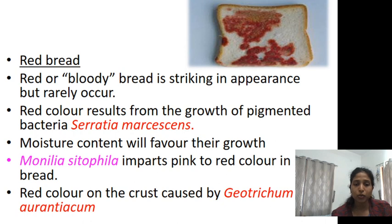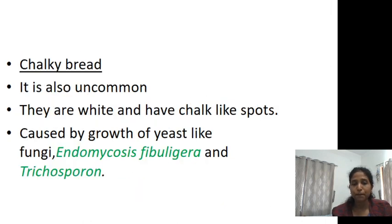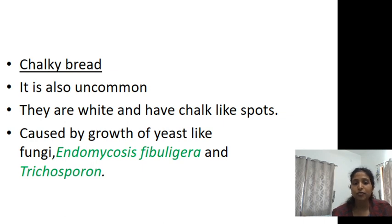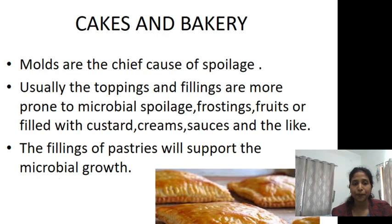Red color on the crust is caused by Geotrichum aurantiacum. Chalky bread, as the name indicates, shows chalk-like spots on the bread, which is caused by yeast-like fungi Endomycopsis fibuligera and Trichosporon.